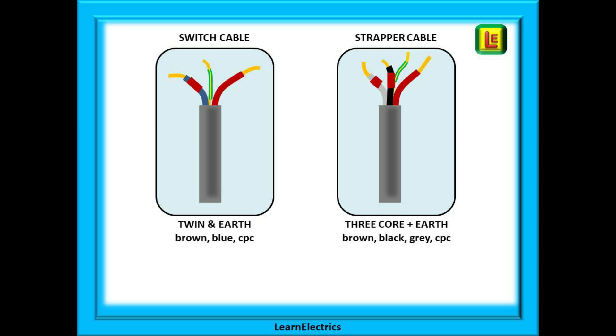We will build up the circuit in stages and then look at current flow through the circuit. The switch cable is often standard twin and earth cable. The blue is not used as a neutral. It will at some point carry 230 volts and should be marked with brown sleeving at both ends. The strapper cable is 3 core plus earth: brown, black, gray, and all three colors will carry 230 volts, so the black and gray should also be sleeved in brown. On the drawings that follow we have left off the CPC or earth and also the brown sleeving for clarity.